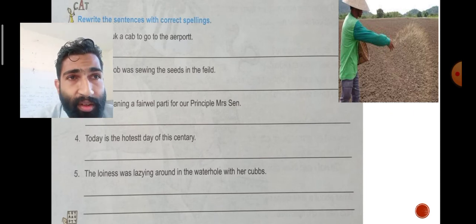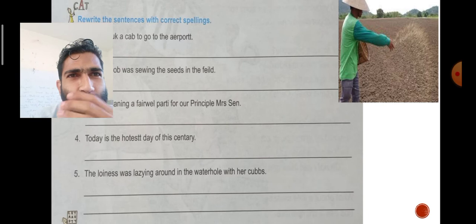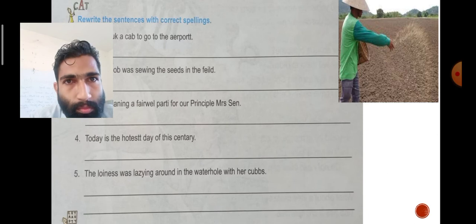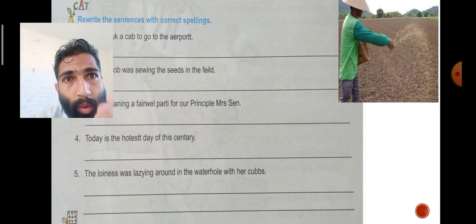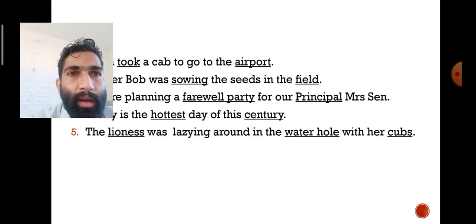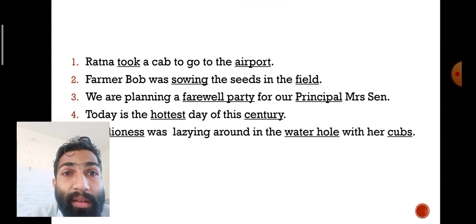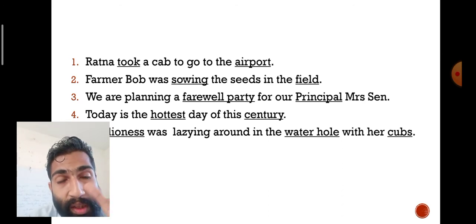You understood where the mistakes are—most of the words you know without me telling you. Let's check whether the spellings you got are right or wrong. Retina took a cab to go to the airport—not a-e-r-p-o-r-t-t, it's airport.